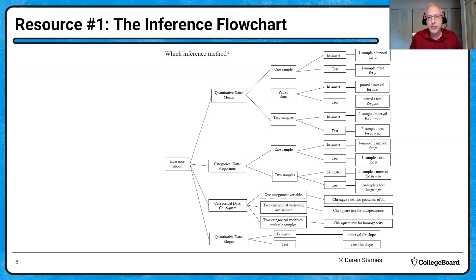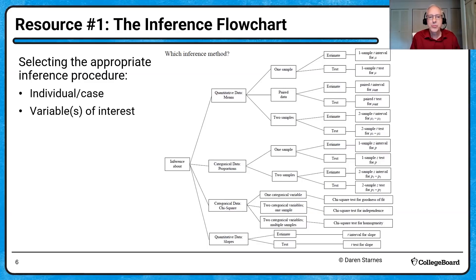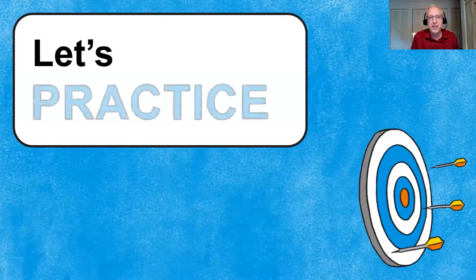Here is the inference flowchart — my own version developed with students. When selecting the appropriate inference procedure, we start by identifying what the individuals or cases are in the data set. Then we talk about the variable or variables of interest that the researchers measured. We classify those variables as either categorical or quantitative, because distinguishing between those types of data is the key to getting to the right inference procedure. Then we move forward from the inference about box into the correct subsequent box.